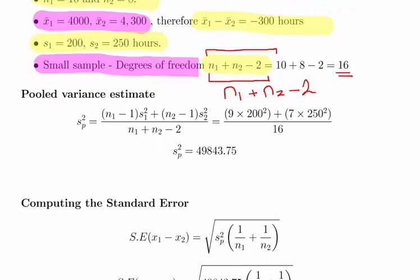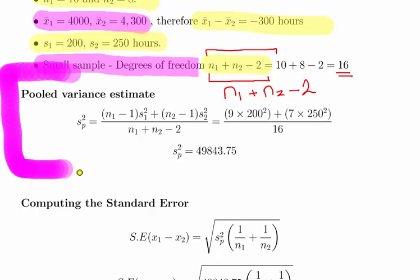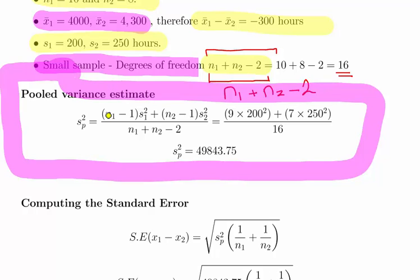Now, the first big step is to get the pooled variance estimate. This is a formula that we would probably see in the back of the exam paper here. n1 minus 1 times s1 squared plus n2 minus 1 times s2 squared all over n1 plus n2 minus 2. That's essentially the minus 1 of the sample size there. So that's what I started saying there. It's essentially those two added together. It's essentially a weighting actually.